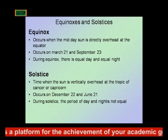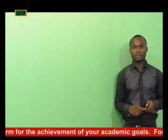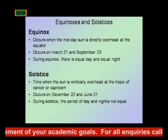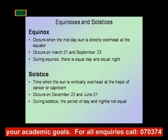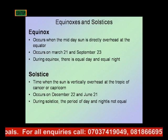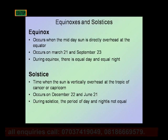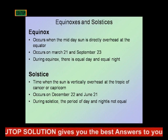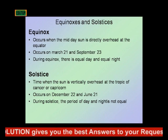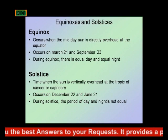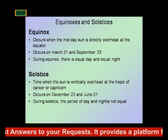On September 23rd and December 22nd and June 21st, we have the Solstice. This is a time when the sun is vertically overhead at the Tropic of Cancer or Capricorn. However, during Solstice, the period of day and night is not equal.